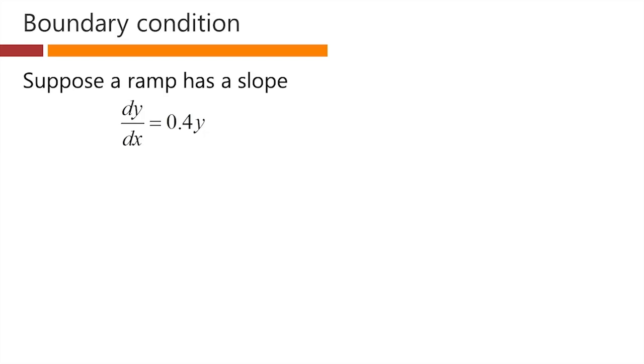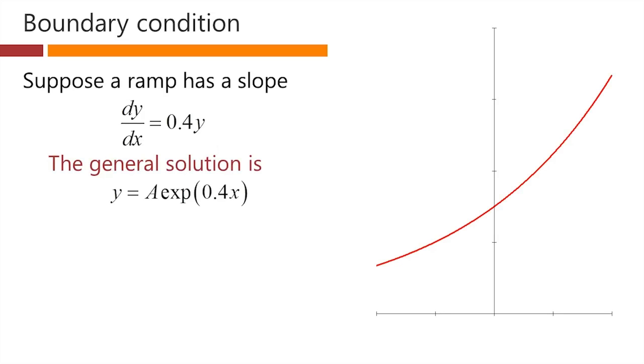Let's choose a specific value for our constant small a in our differential equation. Let's choose that to be 0.4. We're now saying we have a ramp of some kind with a slope dy/dx which is equal to 0.4 times y. The general solution has to be y equals capital A, some undetermined constant, times the exponential of 0.4 times x.